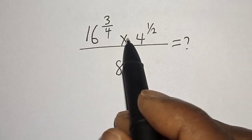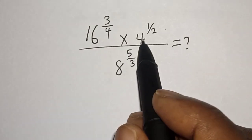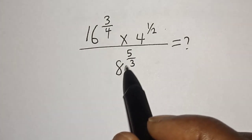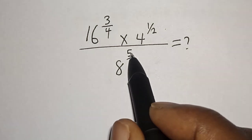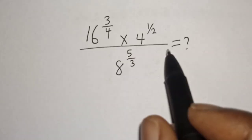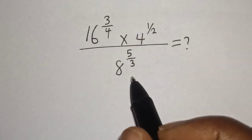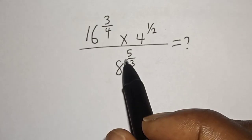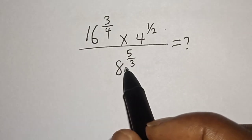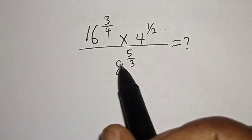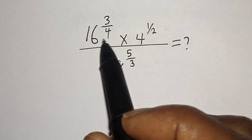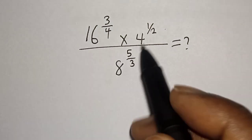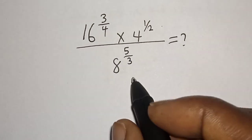16 raised to power 3 over 4, multiplied by 4 raised to power 1 over 2, divided by 8 raised to power 5 over 3 — is equal to what? Hi everyone, welcome to my class. In this class we quickly want to find the value and simplify this problem, but before we proceed, don't forget to like, share, comment, and subscribe.